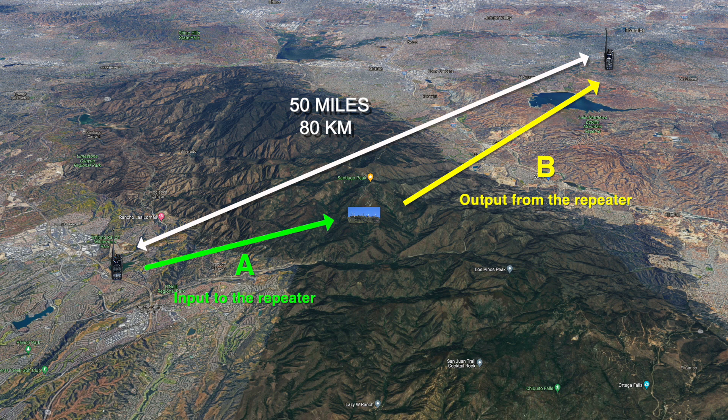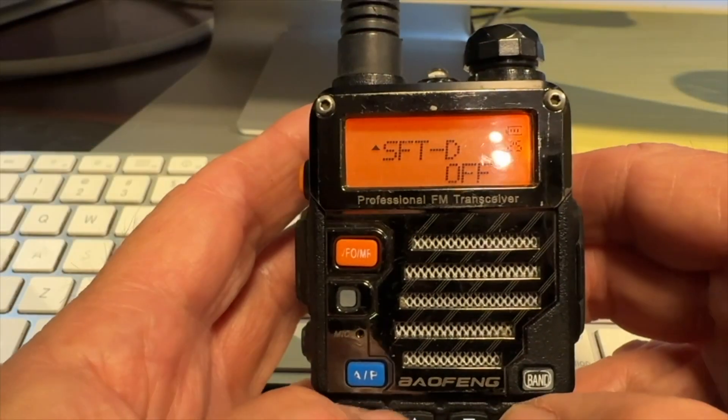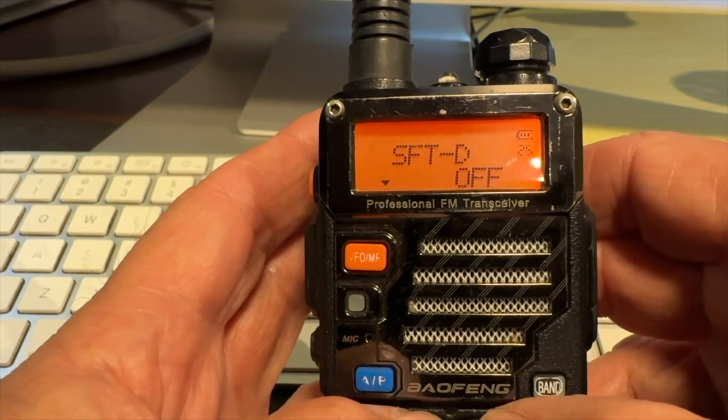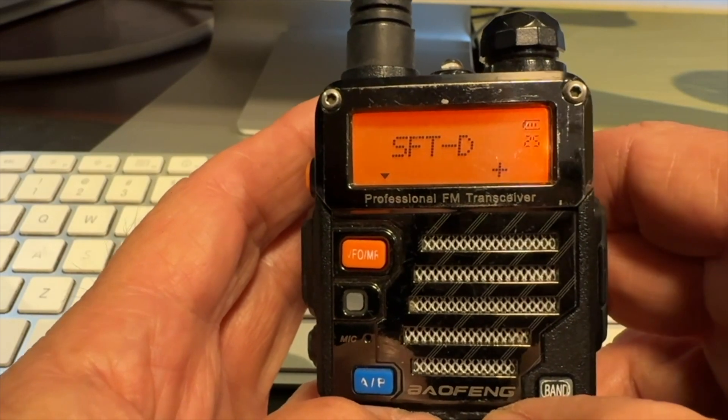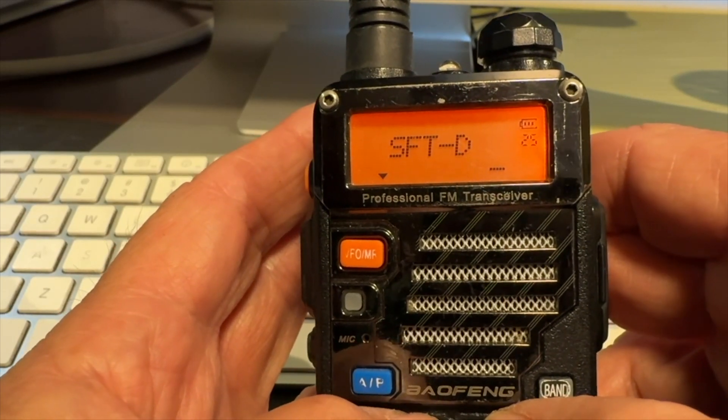Your handheld radio transmits on frequency A and listens on frequency B. It does this receive and transmit frequency split automatically, but you have to program the radio properly to make it happen. Fortunately, with modern day radios, it's pretty easy to do.